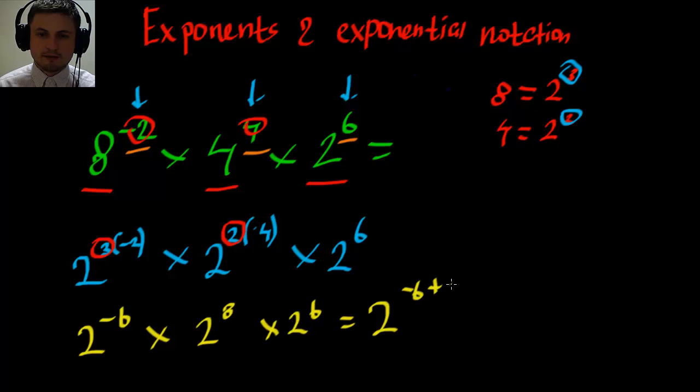Which equals to two to the power of minus six plus eight, put this in brackets, plus six. These two sixes cancel out because minus six plus six is zero. And what you get in the end is two to the power of eight. And that's essentially how you deal with exponents when you have to add them up, when you have to cross multiply negative and positive exponents.